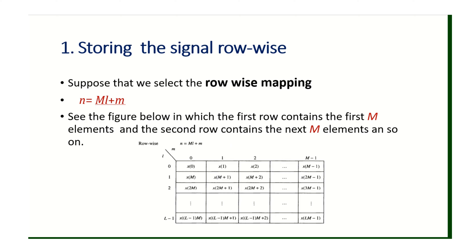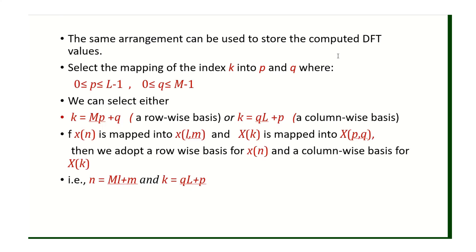A similar representation is used to arrange the computed DFT values X of k. X of k can also be represented as a two-dimensional index (P, Q), where P ranges from 0 to L minus 1 and Q ranges from 0 to M minus 1. The output mapping can be either row-wise or column-wise depending on the input mapping. In this video, since we use row-wise input mapping n = M·l + m, we use column-wise output mapping K = Q·L + P.